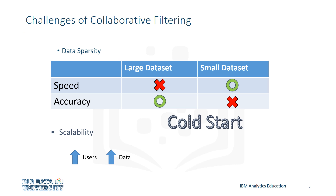Another issue to keep in mind is something called cold start. This is where new users do not have a sufficient amount of ratings to give an accurate recommendation. Scalability can become an issue as well. As the number of users increases and the amount of data expands, collaborative filtering algorithms will begin to suffer drops in performance simply due to the sheer increase in volume.